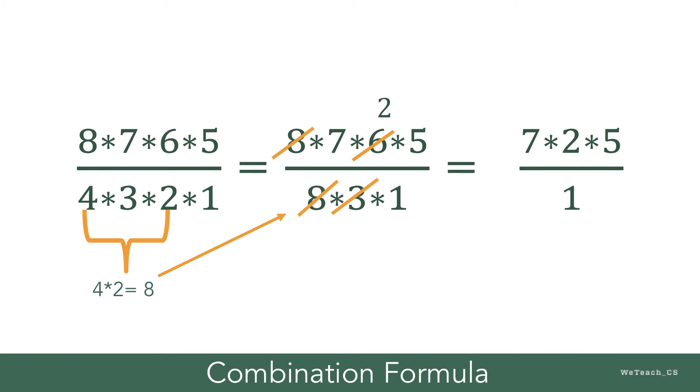We then simplify even further by combining like terms in the denominator to get 8. We cancel 8 on both the numerator and the denominator. Then we cancel 3 from the 6 in the numerator to get 2, leaving us with 7 times 2 times 5 divided by 1.